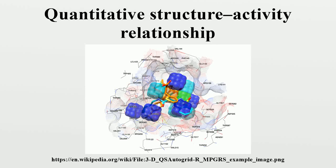Quantitative Structure-Activity Relationship models are regression or classification models used in the chemical and biological sciences and engineering. Like other regression models, QSAR regression models relate a set of predictor variables to the potency of the response variable, while classification QSAR models relate the predictor variables to a categorical value of the response variable.